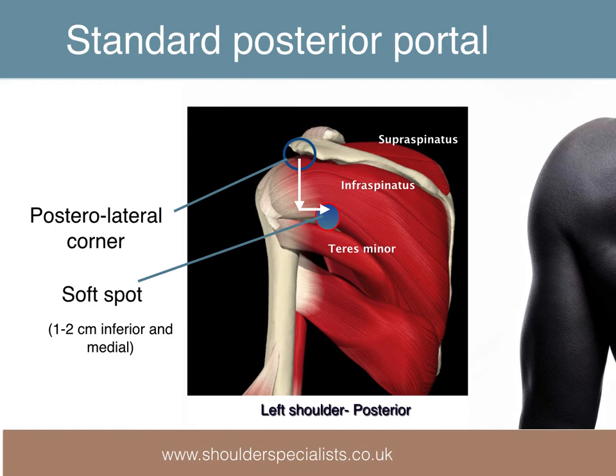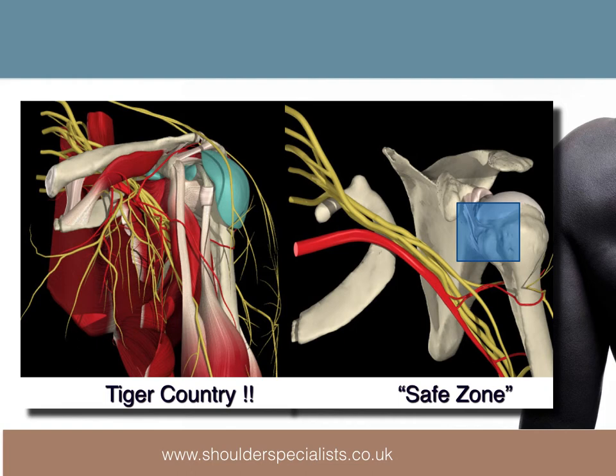The standard posterior viewing portal is always used to first gain entry to the shoulder arthroscopically. This is located in the soft spot about 2 cm inferior and 1 cm medial to the posterolateral corner of the acromion.